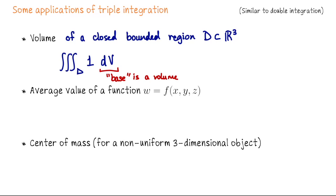When we do triple integration we chop up a region in R3, so what we think of as the base going into our Riemann sum calculation is a little piece of volume. So when I write dV, that's my shorthand for dx dy dz, or dz dy dx, whatever type of region it is.